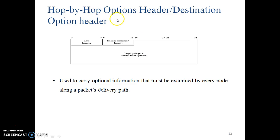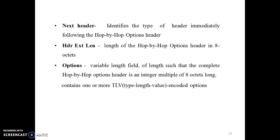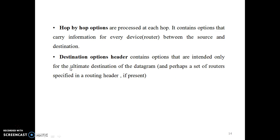The hop-by-hop option header has the same field structure as the destination option header. It is used to carry optional information that must be examined by every node along the packet's delivery path. Its fields are: next header, header extension length, and options.